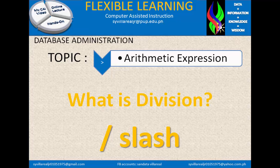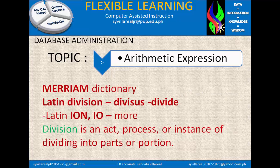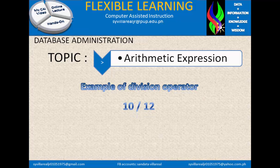Next is division. What is division? Division uses the slash in computers. In the Oxford Dictionary, division is the process of dividing one number by another. In the Longman Dictionary, it is the process of finding out how many times one number is contained in another. In the Merriam Dictionary, division came from the Latin word 'divisor', meaning divide, and 'ion' meaning more. Division is the act or process of dividing into parts or portions. Examples: 10 / 12, slash 3, slash 19 / 4, and A / 2.